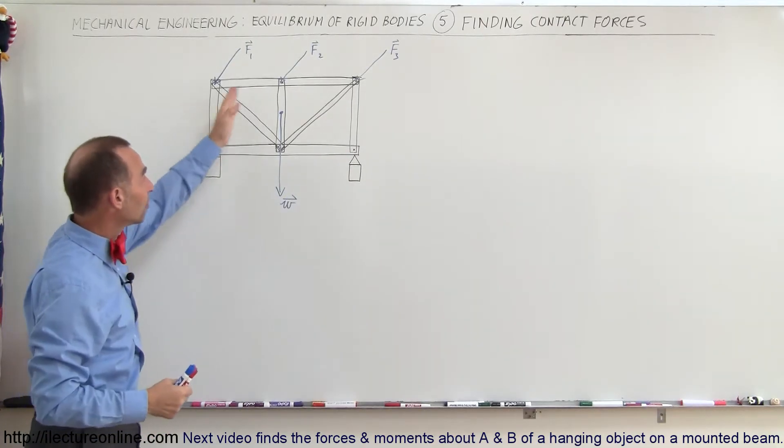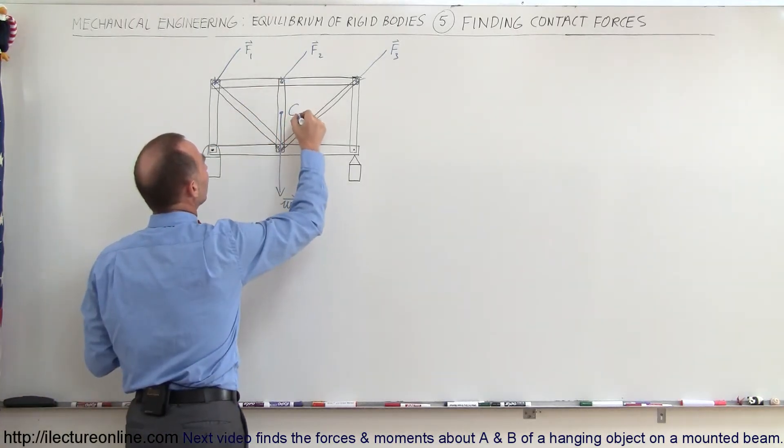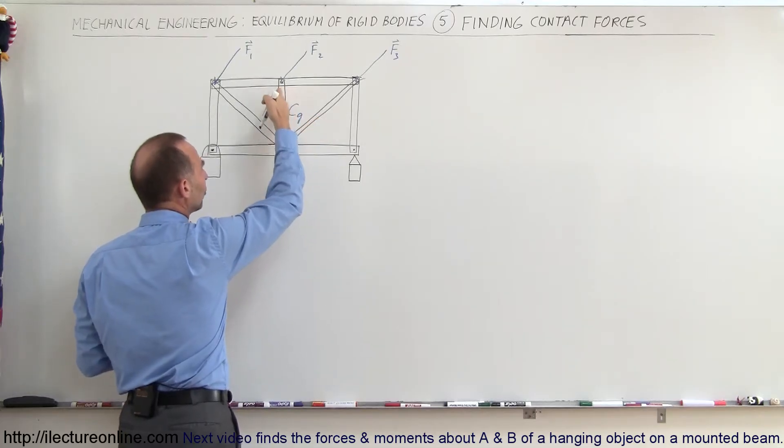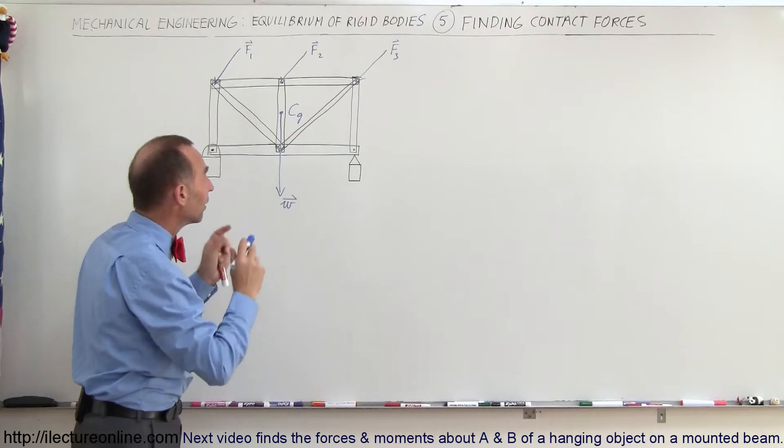Now let's say that this object has weight. This would be the center of gravity. So let's call it C sub G, the center of gravity. And so this would be the weight, as if it's acting from the center of gravity of the entire structure.